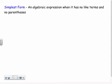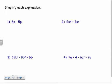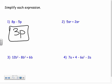Simplest form: an algebraic expression is in simplest form when it has no like terms and no parentheses. We just did that — we got an expression into simplest form by combining like terms and getting rid of parentheses. So for simplest form: get rid of parentheses using the distributive property, and combine like terms. First one: 8p minus 5p — like terms, both have p. 8 minus 5 is 3, so I have 3p.